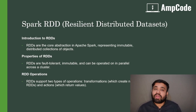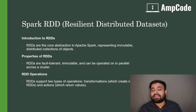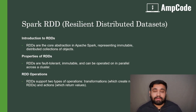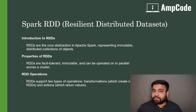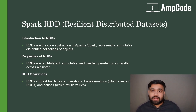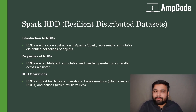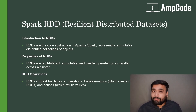Let's talk about the properties of RDD. First, RDDs are immutable, meaning they cannot be changed once they are created. However, you can create another RDD using the previous one, but you cannot change it, which makes it very fault tolerant. Fault tolerant means it is ready for disaster recovery or failure recovery, ensuring that your data will not get lost. It can also be operated in parallel across the cluster.